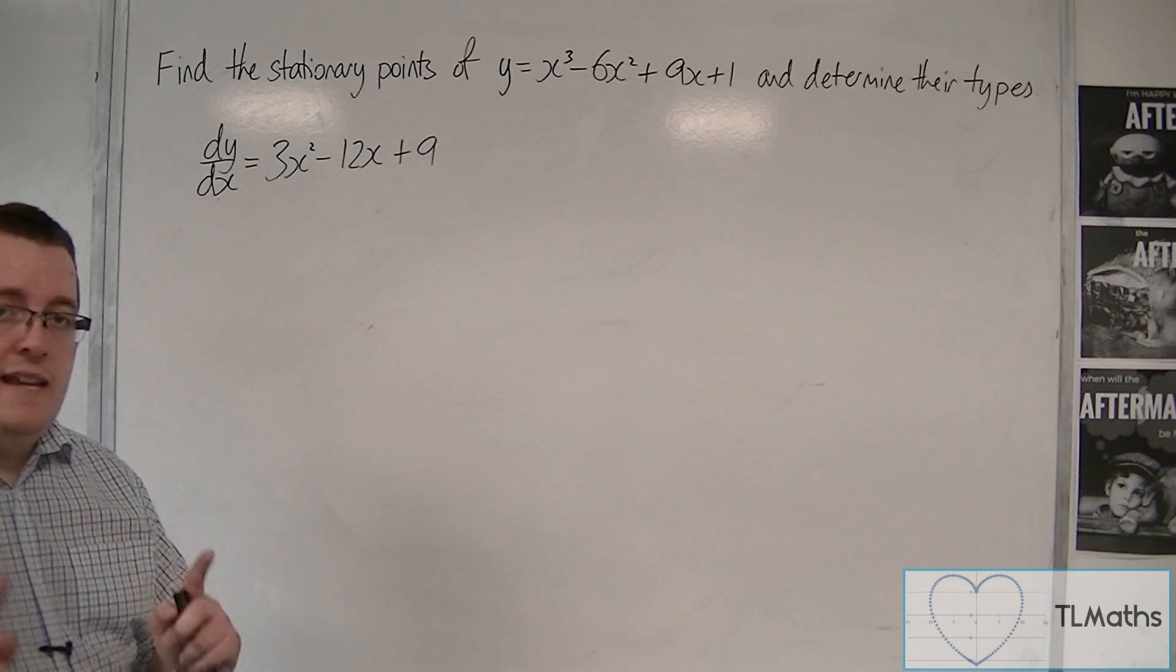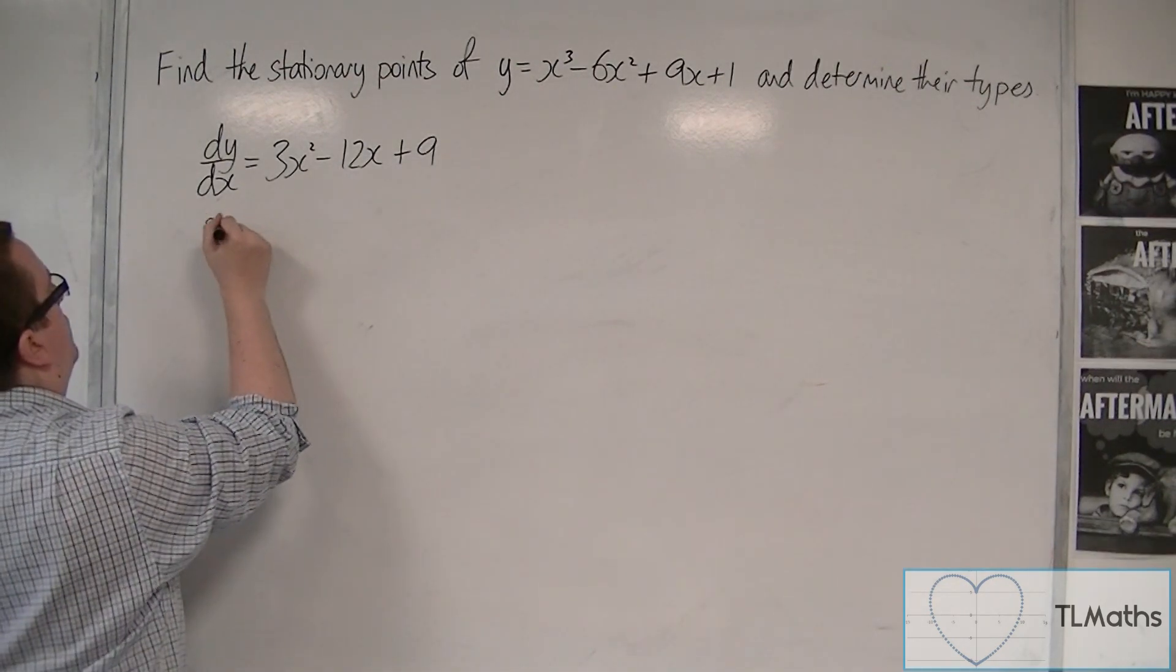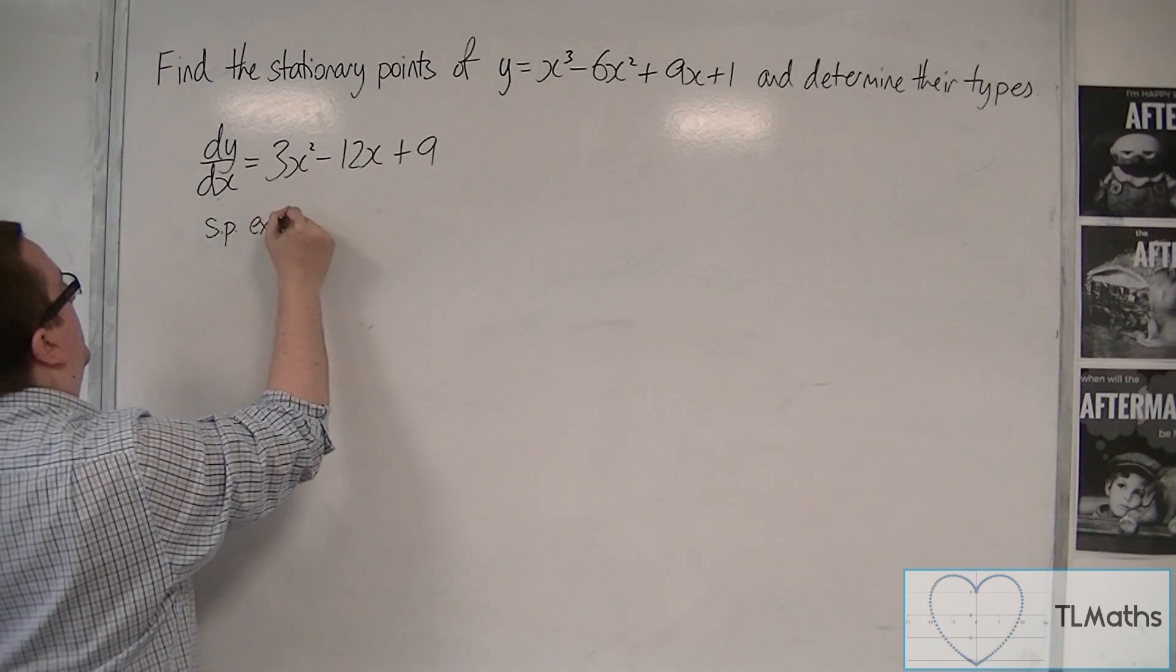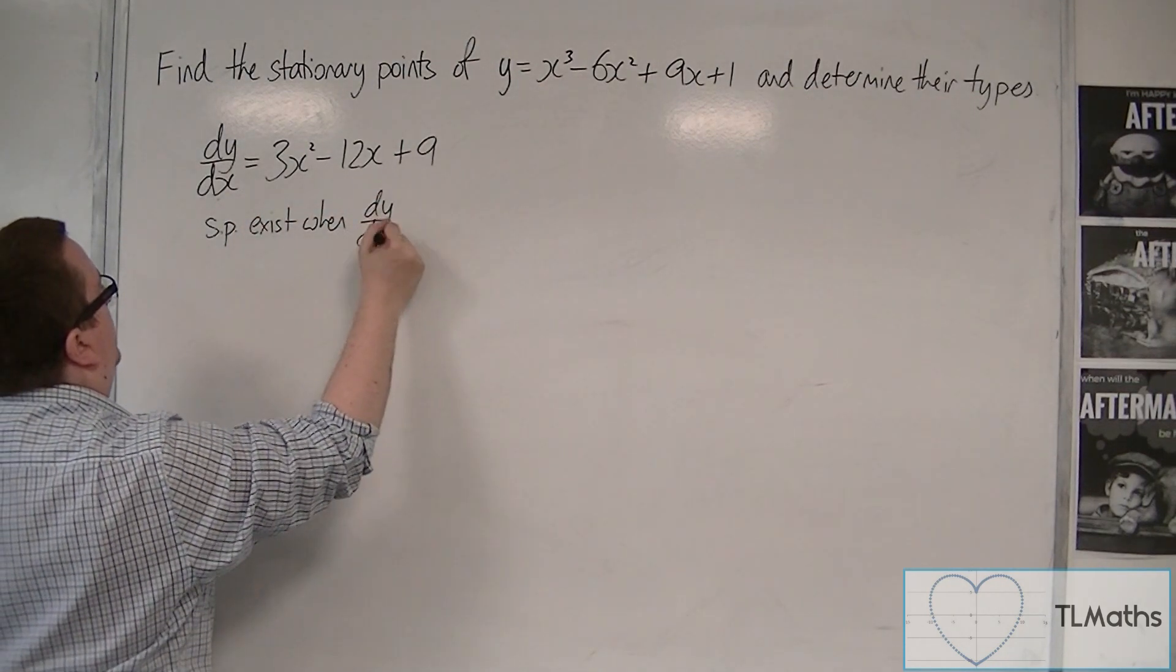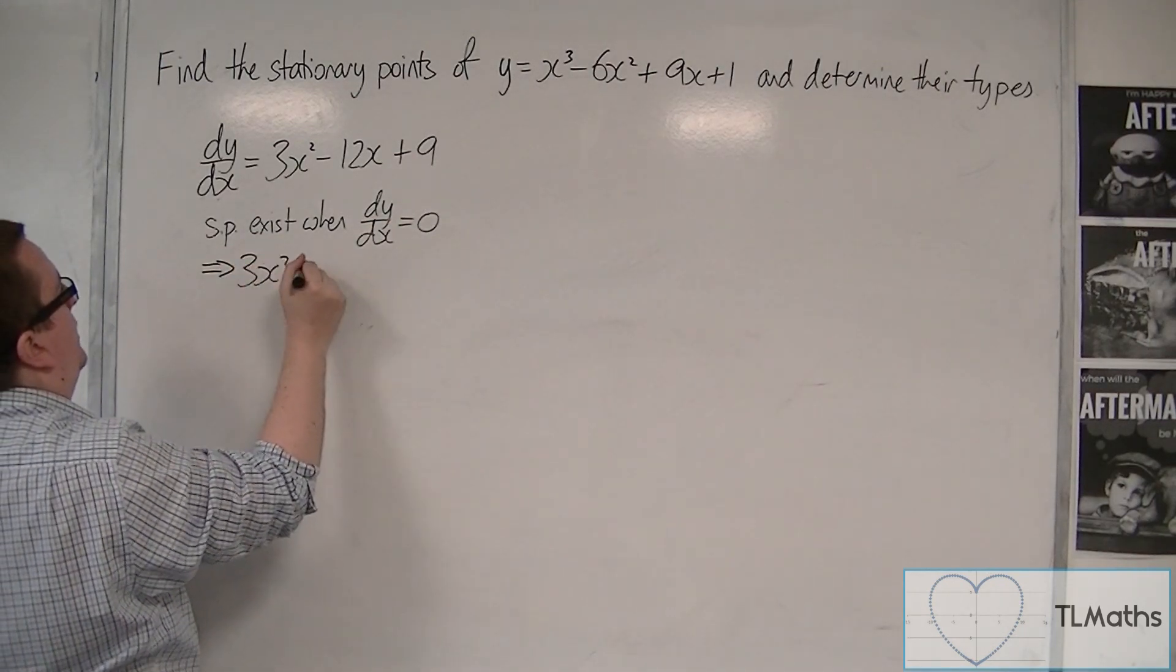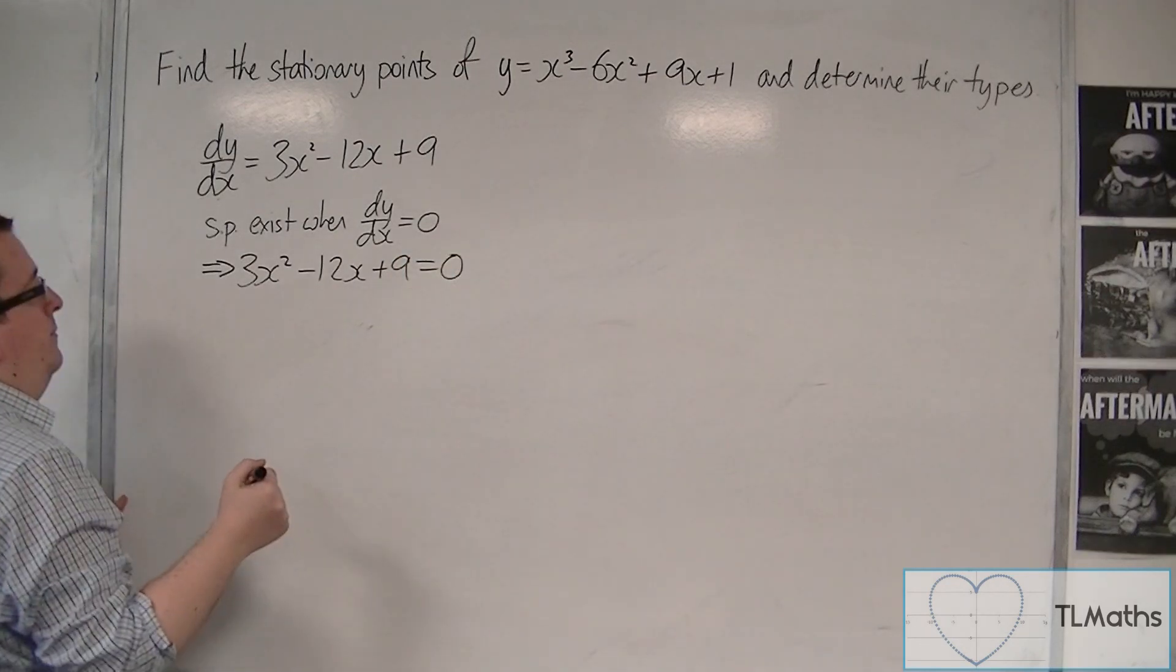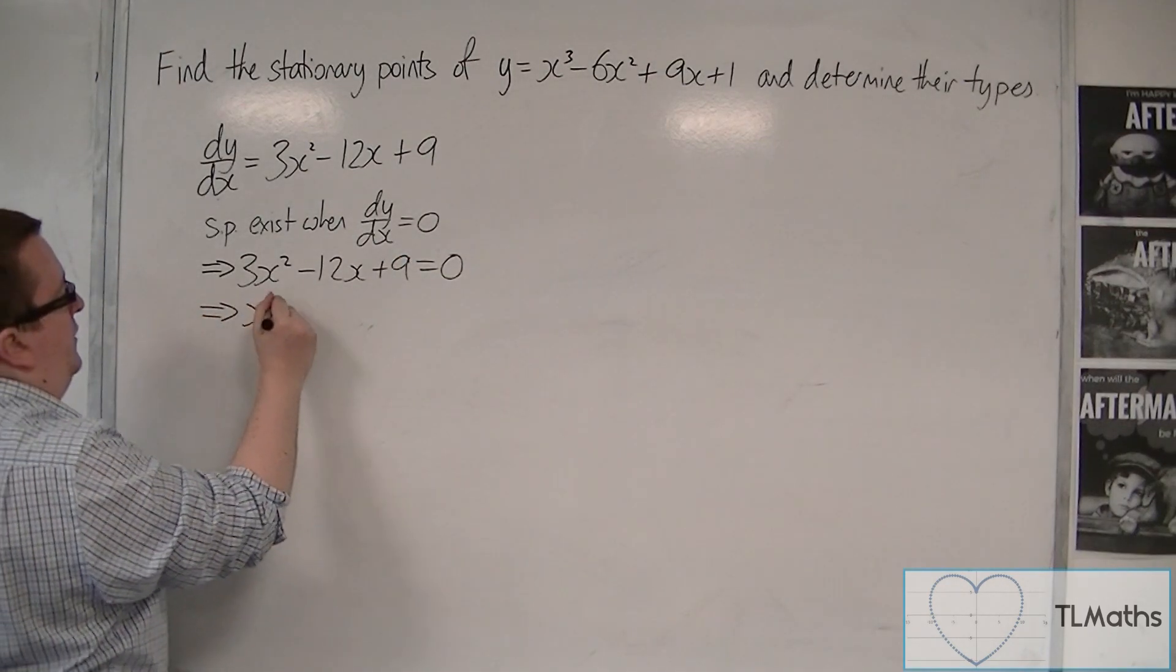We then need to find the stationary points. Stationary points exist when dy/dx is 0. So we want to look at 3x² - 12x + 9 = 0. Divide everything by 3 to get x² - 4x + 3.